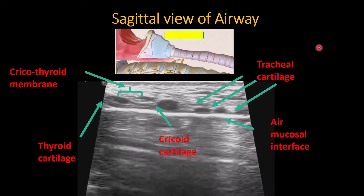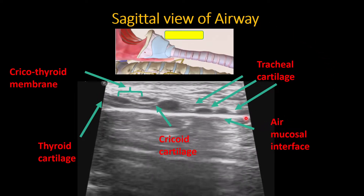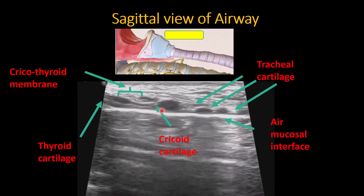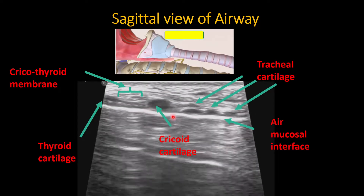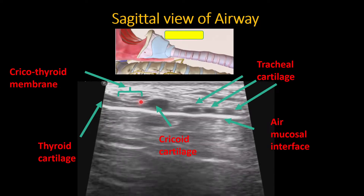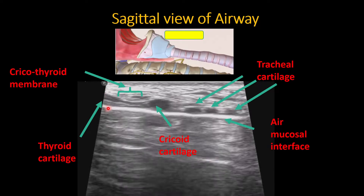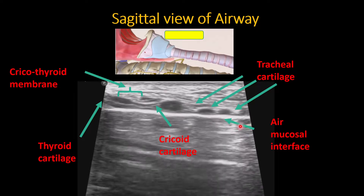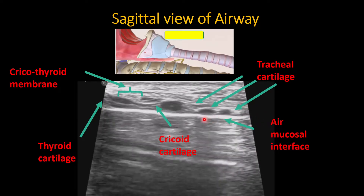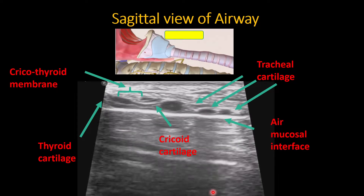This picture summarizes what we've discussed. The chain of pearls has the largest pearl on top, followed by the tracheal membrane and then the tracheal cartilage. You can see a white thick appearance here which is the mucosa membrane. Anything beyond that is air.